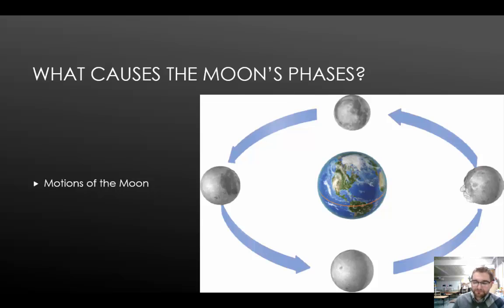Motions of our moon. When you look up at the moon, you may see what looks like a face. What you are really seeing is a pattern of light-colored and dark-colored areas on the moon's surface. Oddly, this pattern never seems to move. The same side of the moon, the near side, always faces Earth. The far side of the moon always faces away from Earth. The answer to this has to do with the motions of the moon.